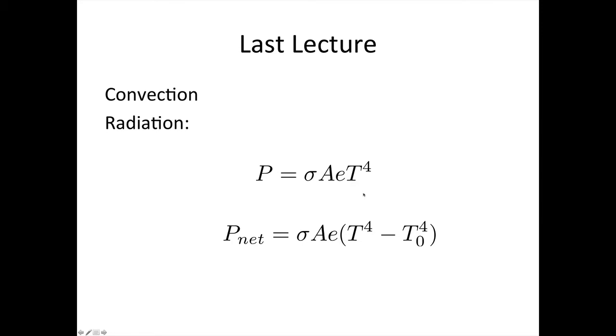And T is the temperature of the body. What we're most interested in usually is the net rate of heat, though, as the body's radiating heat, it is also absorbing heat from its surroundings. So the net rate of heat transfer is given by this equation here, where T0 is the temperature of the surroundings.